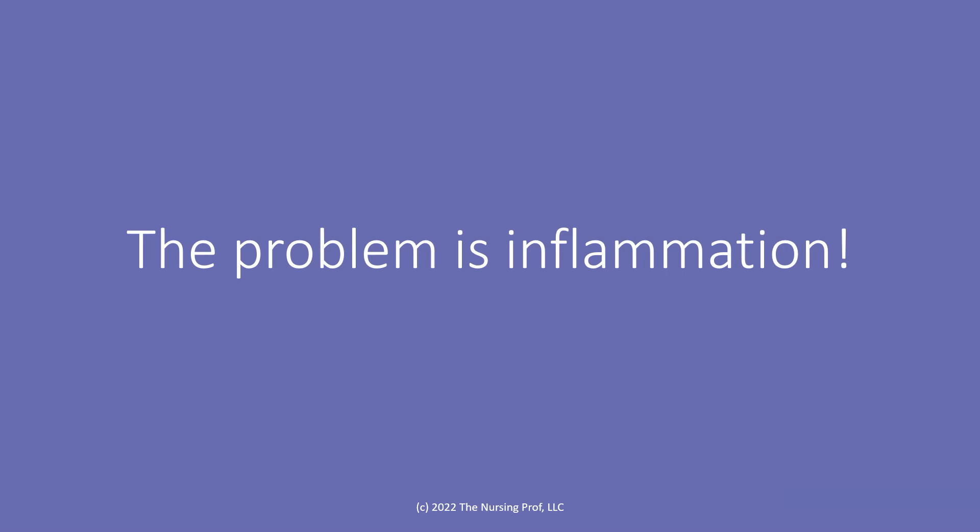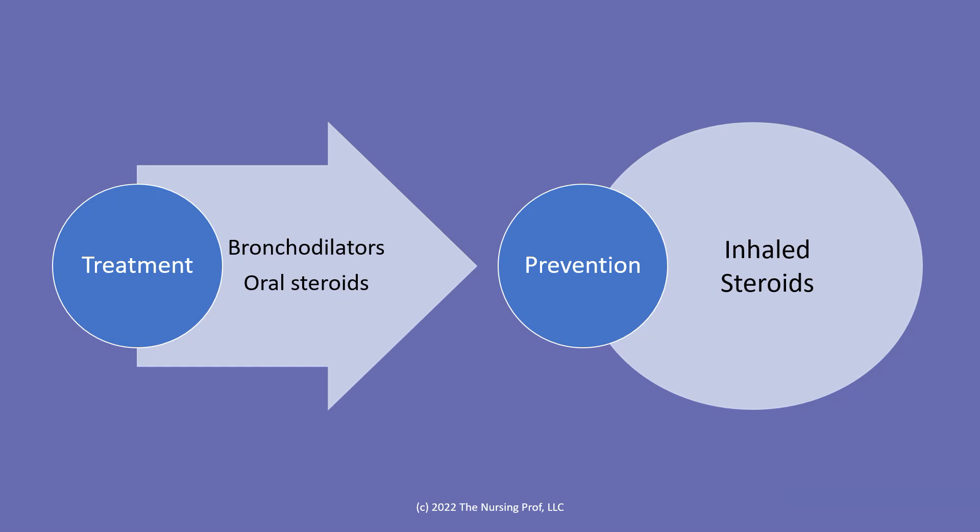The core problem in asthma and COPD is inflammation. We have a couple of different treatment options: bronchodilators and oral steroids as treatment pieces, and inhaled steroids as a prevention strategy. Bronchodilators work directly on the smooth muscle to open it up — used in an acute situation. Oral steroids decrease inflammation, but we don't want patients on them long-term, so as a prevention strategy we use an inhaled steroid instead to decrease inflammation occurring in the lung.